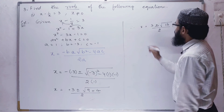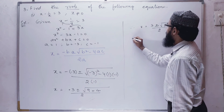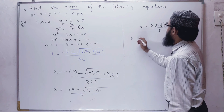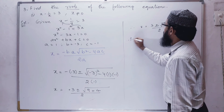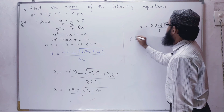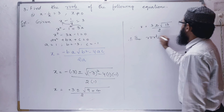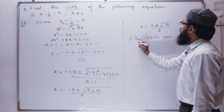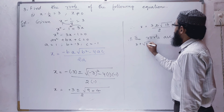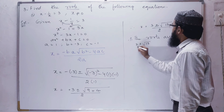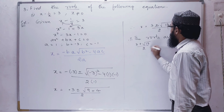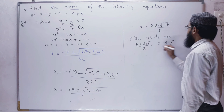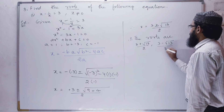Therefore, the roots are 3 plus root 13 by 2 and 3 minus root 13 by 2.